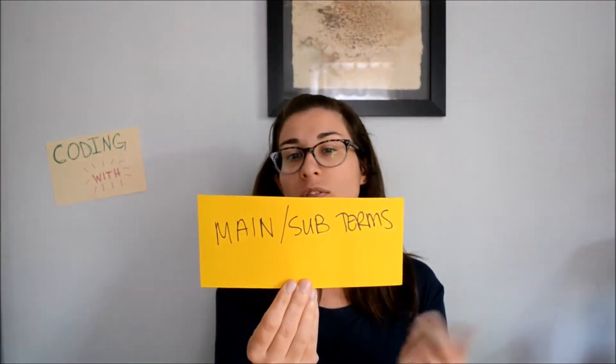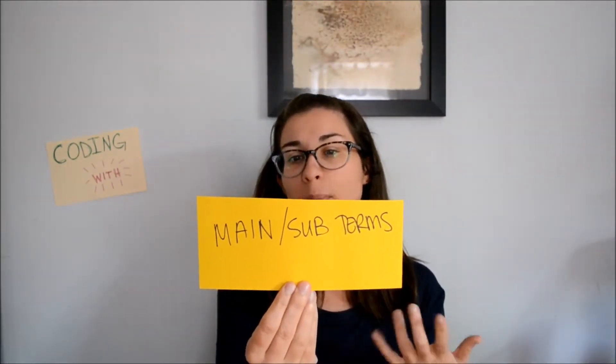So the first term or terms you will see in the codebook is the main and subterms. So these are the searchable words in the alphabetic index. When you look into the index, you want to find your main term, which I talked about in the previous video. I'll have a link in the description. And within the alphabetic index, those will be bolded. And then the subterms are indented below them, which give more detailed information about that main term.